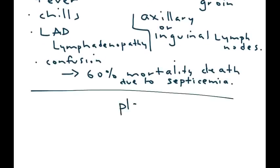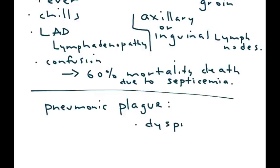Another type of plague caused by the same organism is pneumonic plague. As the name implies, it presents as a primary lung infection. In addition to fever and chills, the patient will also present with difficulty breathing (dyspnea) and blood in their sputum — coughing up blood, or hemoptysis.